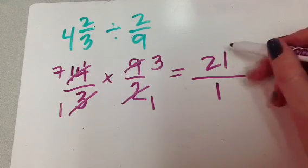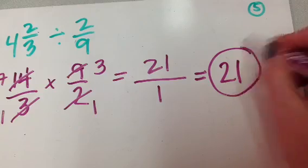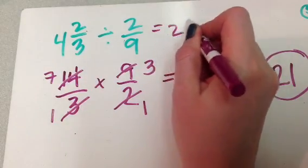1 times 1 equals 1. And so again, here I have a number over a 1, which means that it is a whole number. So I could say that 4 and 2 thirds divided by 2 ninths equals 21.